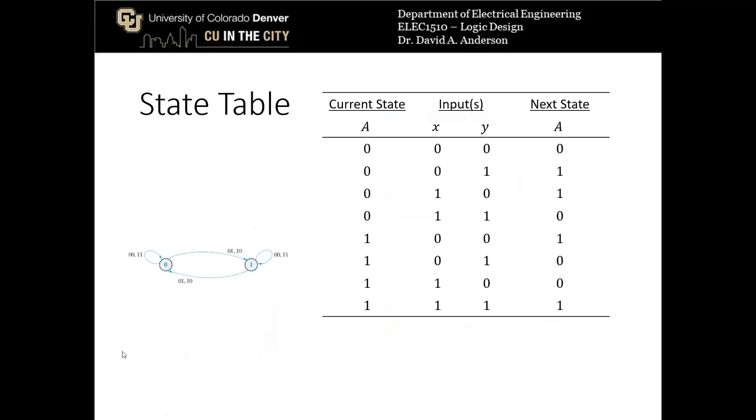Let's do another example of designing a state machine circuit using the state diagram and state table using one of the other examples from the previous video. This state diagram only has one state variable, a. So it has two states, 0 and 1. But it has two inputs, x and y.